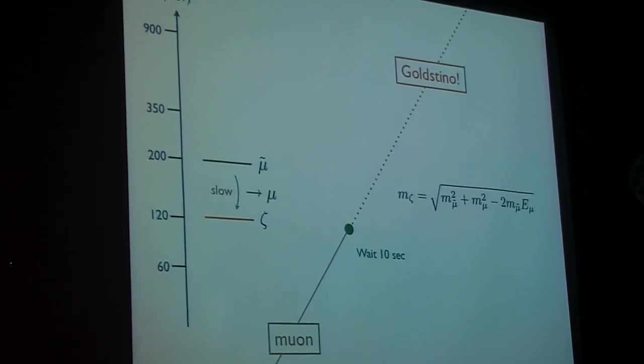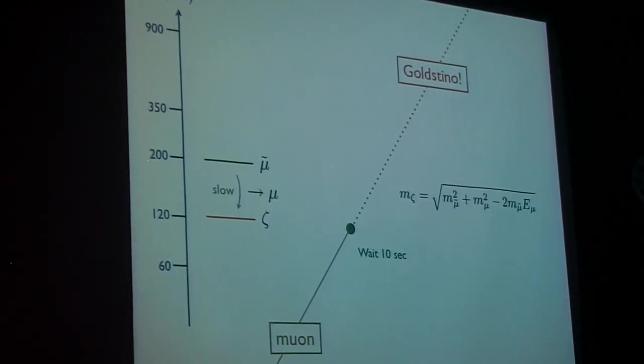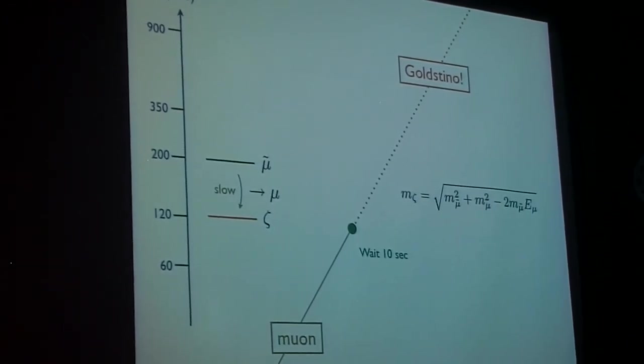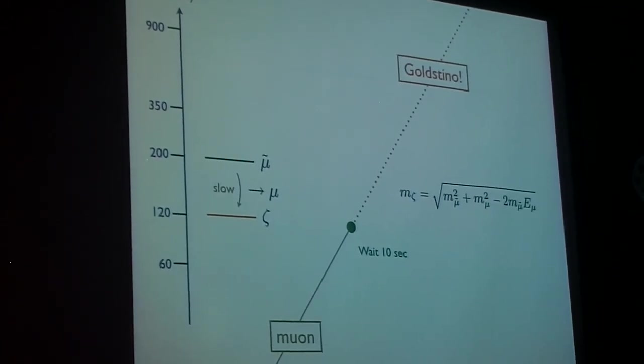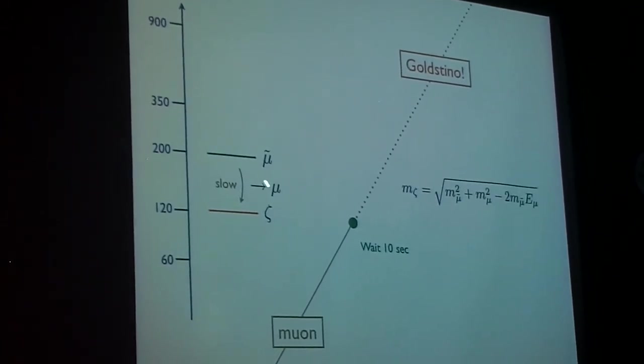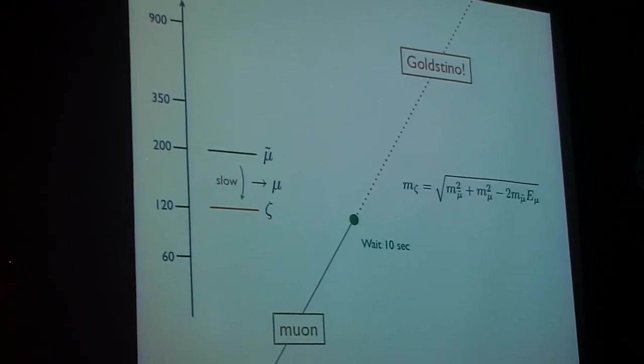Well, gravity couples everything together. So the interaction eigenstates and the mass eigenstates are somewhat mixed. Typically, the branching fraction of a smuon to a Goldstino and a smuon to a Gravitino can be non-negligible, such that you can actually see a second decay...